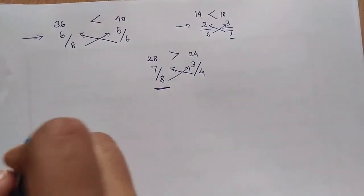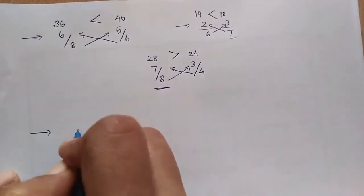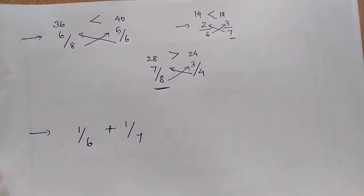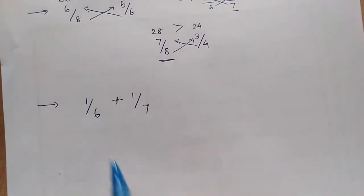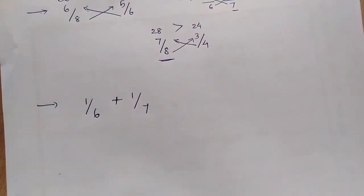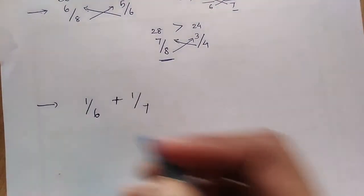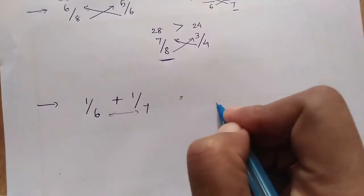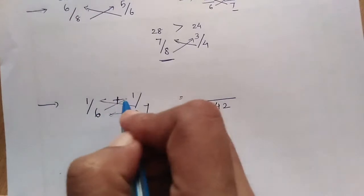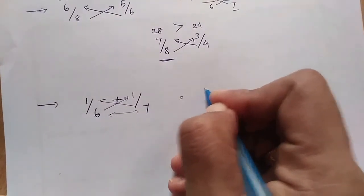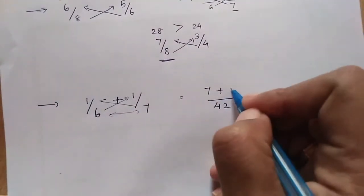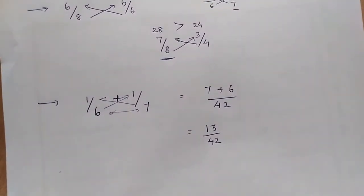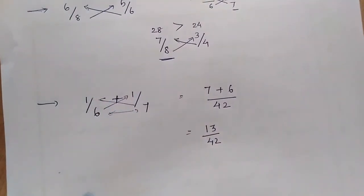Next one: addition. 1/6 plus 1/7. The traditional method is finding LCM and then adding the numbers. There is a shortcut for this. First, we multiply the denominators, that equals 42. Then cross multiply the values and sum: 7 times 1 is 7 plus 6 times 1 is 6, which equals 13/42. This will be the result we get through the LCM method also.